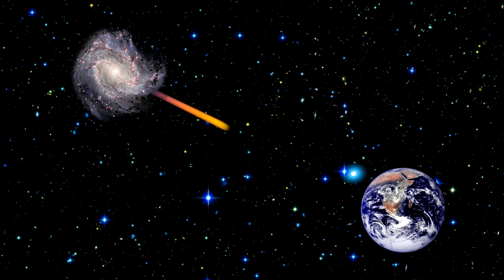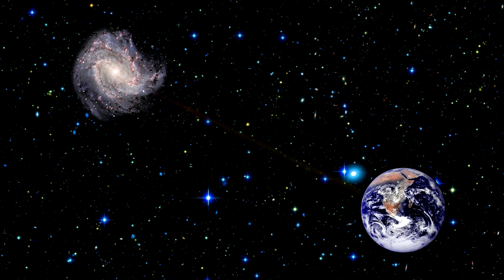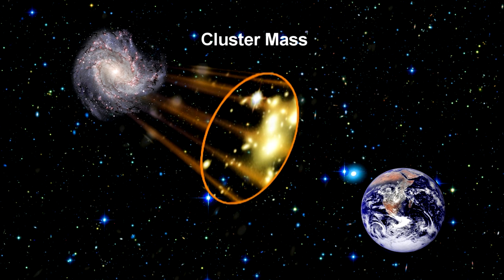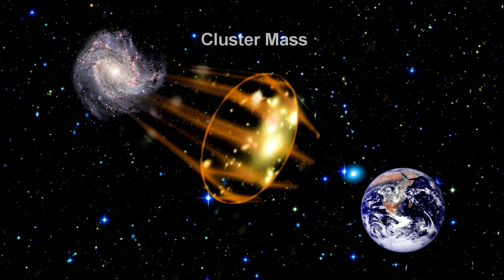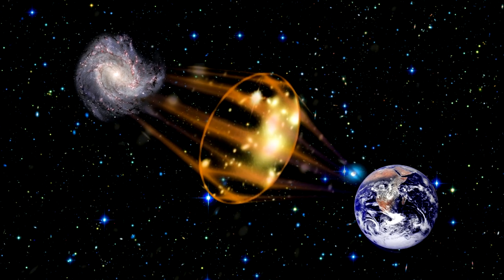A distant galaxy would be seen here on Earth directly if there were no intervening massive cluster to bend the light. But with such a cluster, the light from the distant galaxy gets bent into rings and arcs that continue on to the Earth.